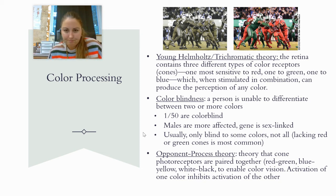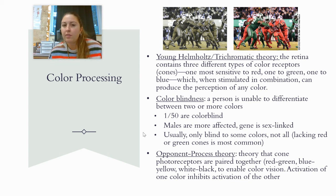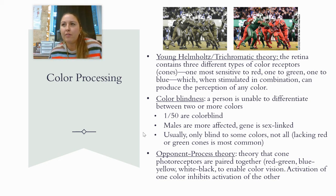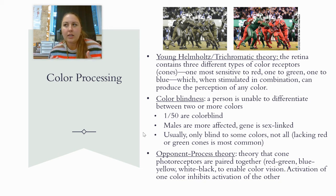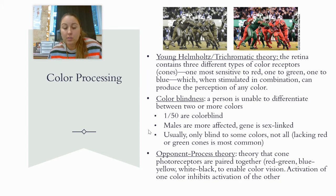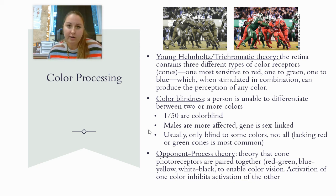Color blindness relates to this because when a person is colorblind, it typically is because they are lacking or have a defective cone — either their red cone, their green cone, or more rarely their blue cone is not working properly. If you have a defective red cone, it's going to be hard to tell the difference between red and green because they're all stimulating about the same. Also with colorblindness, males are much more affected because the gene is sex-linked — carried on the X chromosome. Since males only inherit one X, one copy of the gene means they will have it; females must inherit two copies.